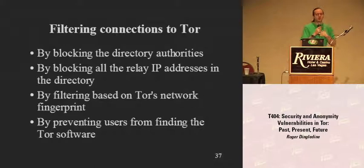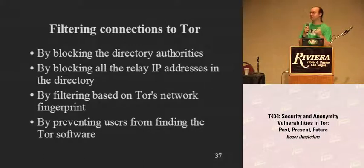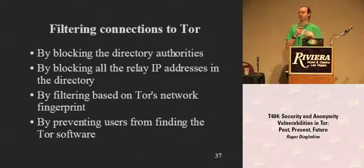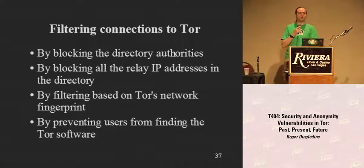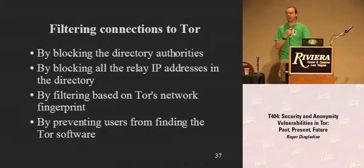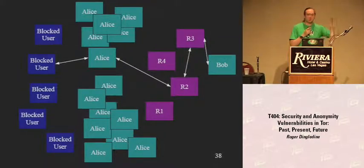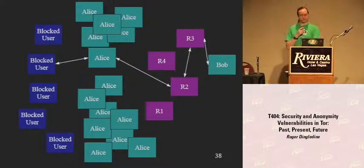Another issue we need to work on: filtering connections to Tor. I had a talk here at DEF CON last year on this. There are a lot of different ways people can attack connections to the Tor network — blocking the six directory authority IP addresses, pulling down the whole list and blocking all 1,500 IP addresses, detecting the SSL connections as Tor and blocking them, or just blocking TorProject.org. China finally blocked TorProject.org a few weeks ago. The approach we're working on is bridges — the basic idea is that users relay traffic from blocked users through a Tor client into the Tor network.